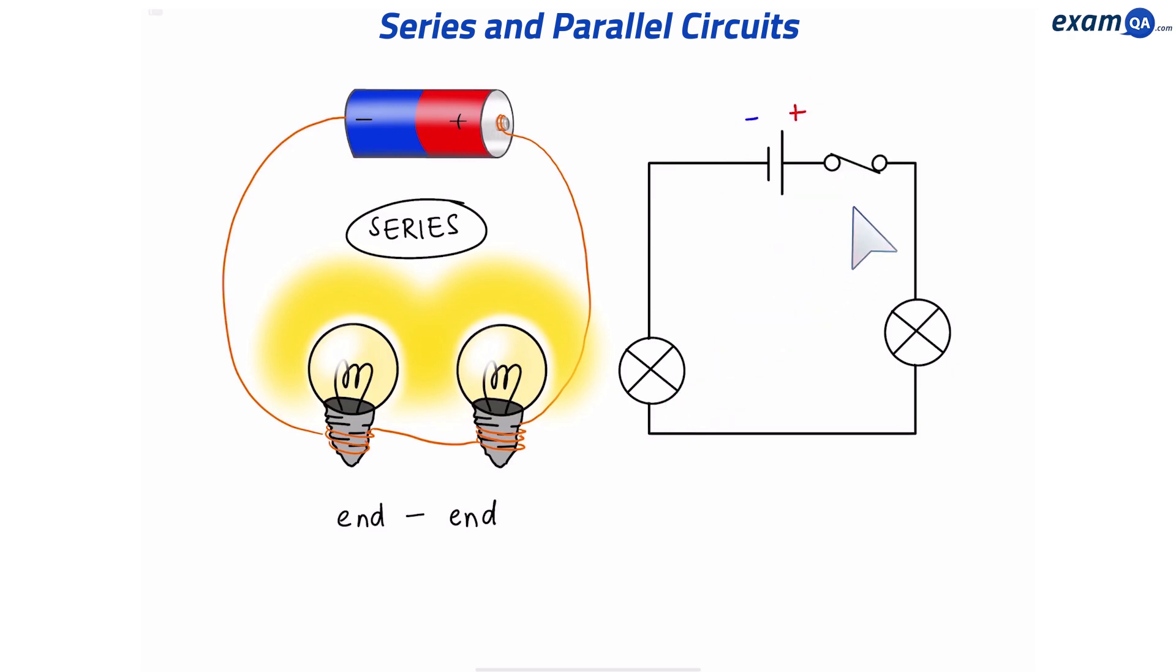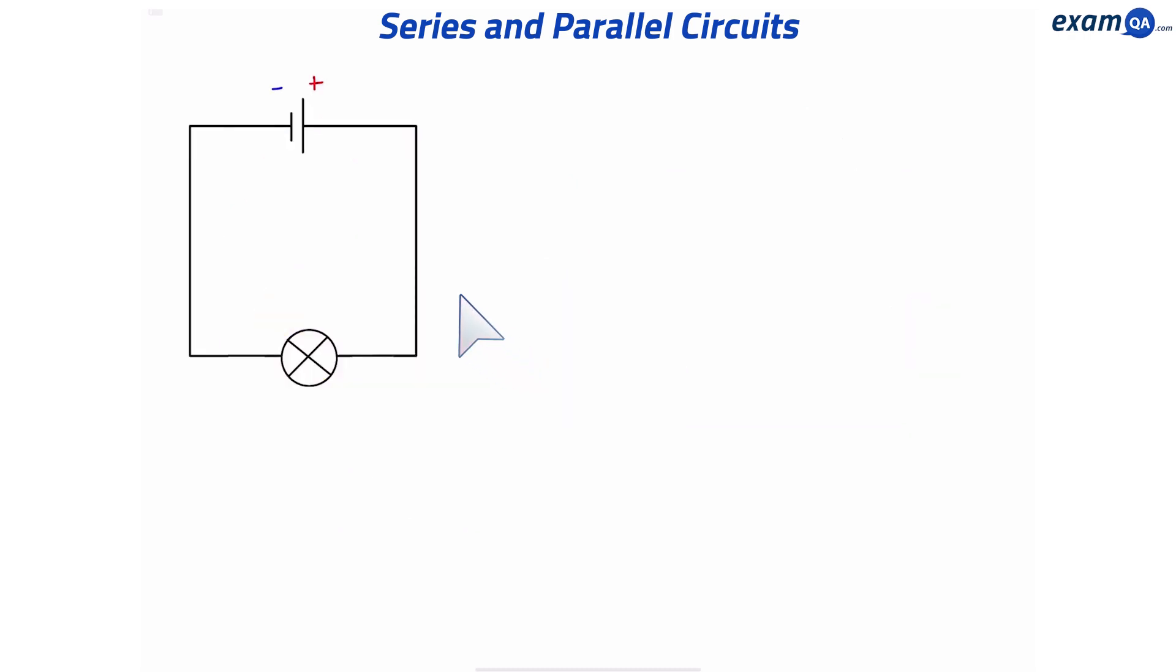This is a switch. And right now the switch is closed. When the switch is closed, the current can flow through the circuits, and we can see the bulbs are still on. If we want to turn the bulbs off, all we have to do is open the switch, and now the current can't flow through the circuit. And back on again.